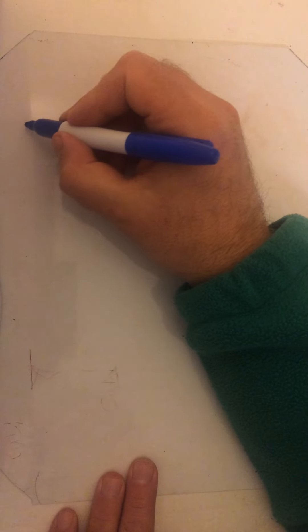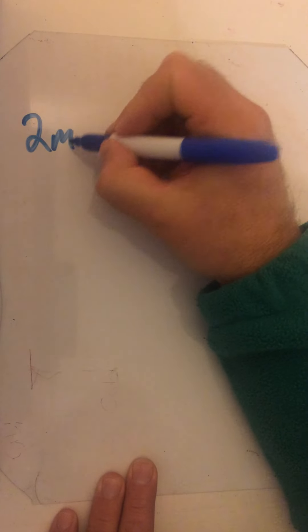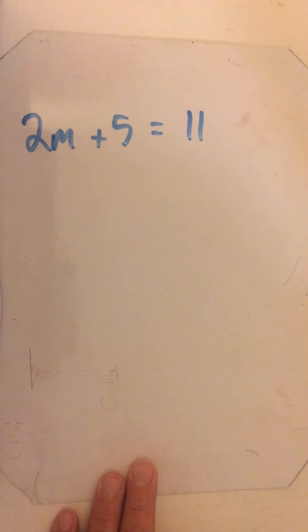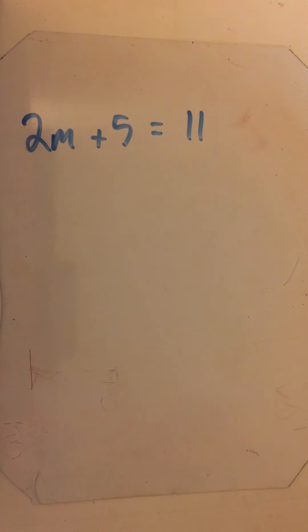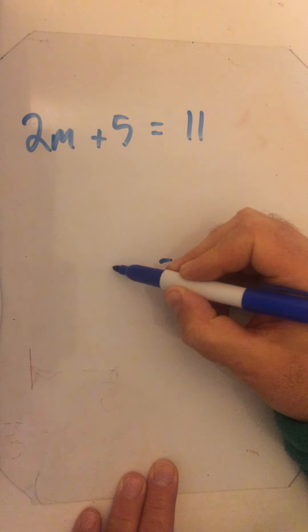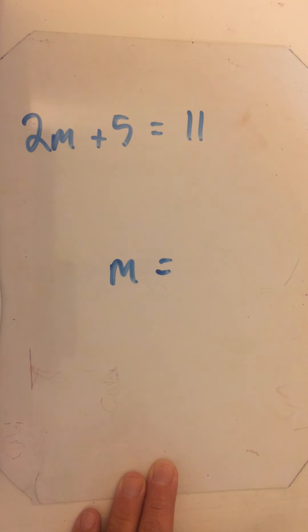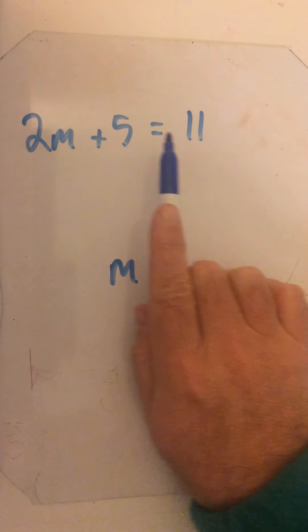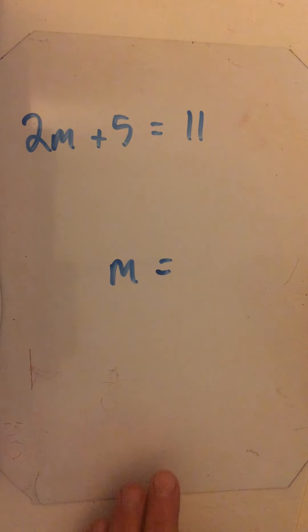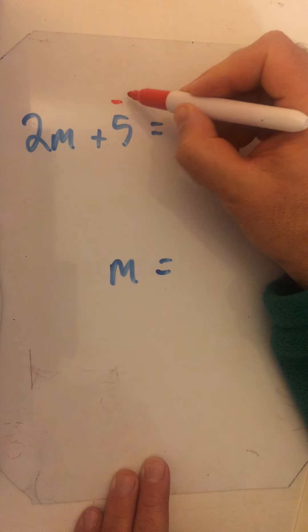So we're going to move on from one-step to two-step questions now. You'll get questions like this: 2m plus 5 equals 11. All we're doing is putting those two methods together — the same rules apply. I want to be left with m on its own on this side of the equation, just like we did yesterday.